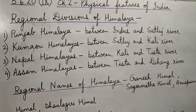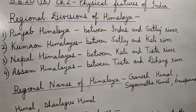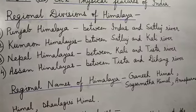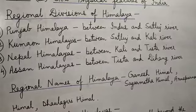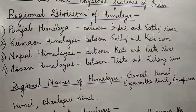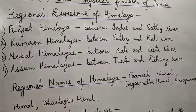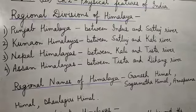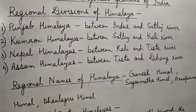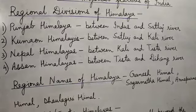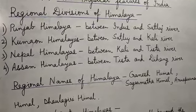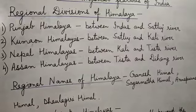Next is Assam Himalaya. The part of Himalaya which lies between Tista and Dihang river is known as Assam Himalaya, stretching for a distance of about 720 kilometers. The eastern Himalaya or Assam Himalaya mainly occupies the areas of Arunachal Pradesh and the neighboring country Bhutan. The Assam Himalaya shows a large dominance of fluvial erosion due to very heavy rainfall.